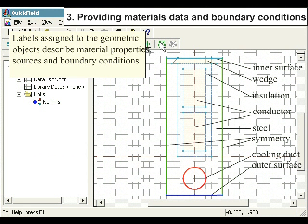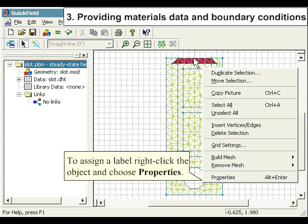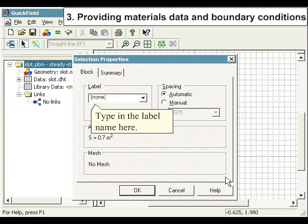Providing Materials Data and Boundary Conditions. Labels assigned to the geometric objects describe material properties, sources, and boundary conditions. To assign a label, right-click the object and choose Properties. Type in the label name here.